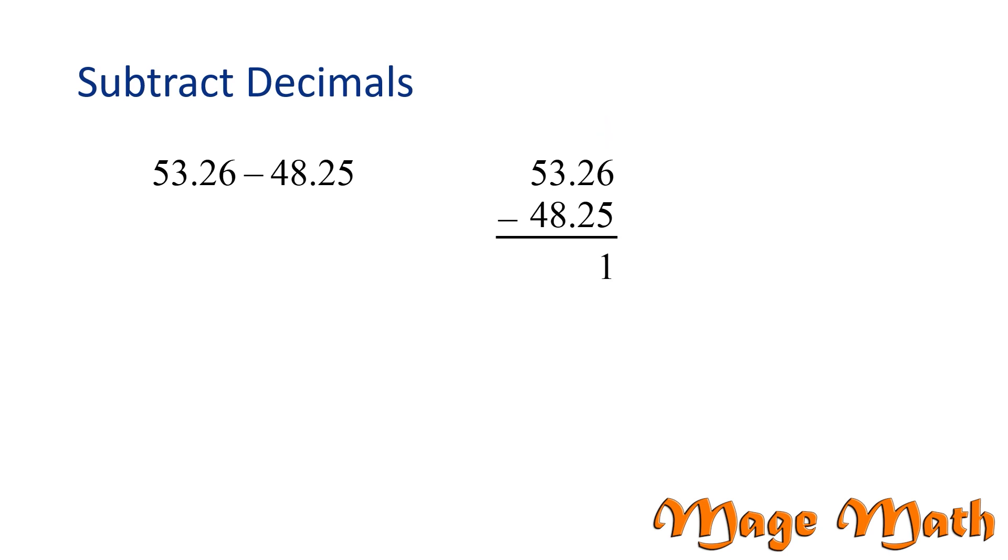6 minus 5 is 1, so we write 1 below the equals bar. Then we move on to the next column. 2 minus 2 is 0. Now we make sure to bring down the decimal point.